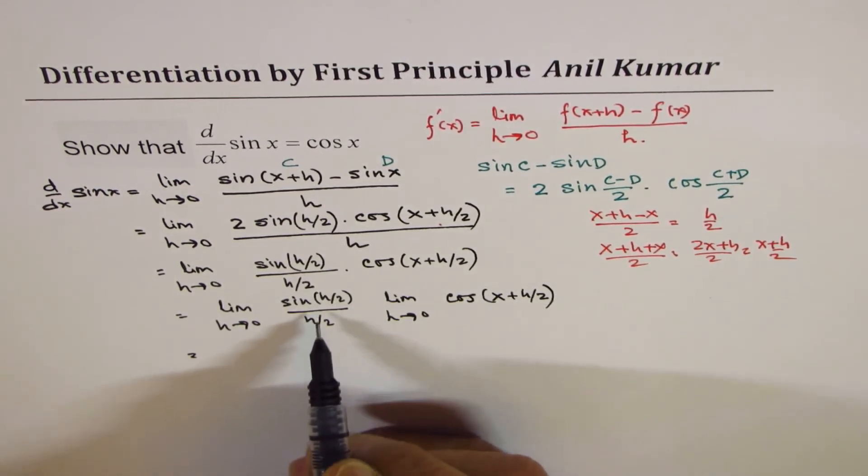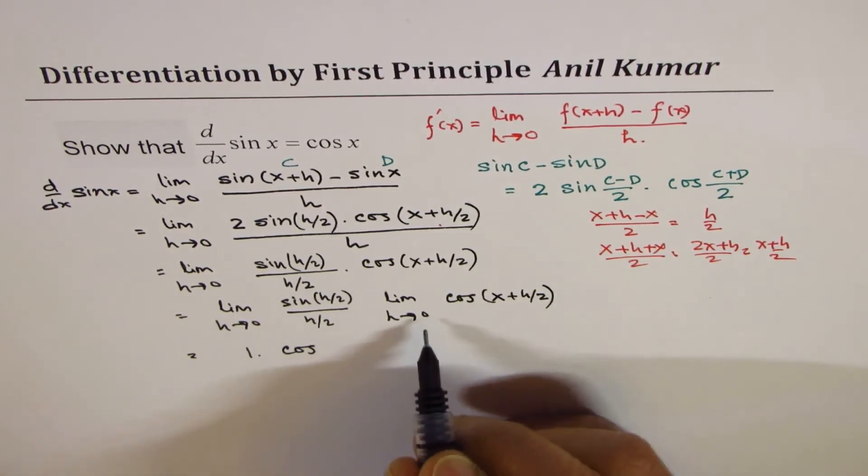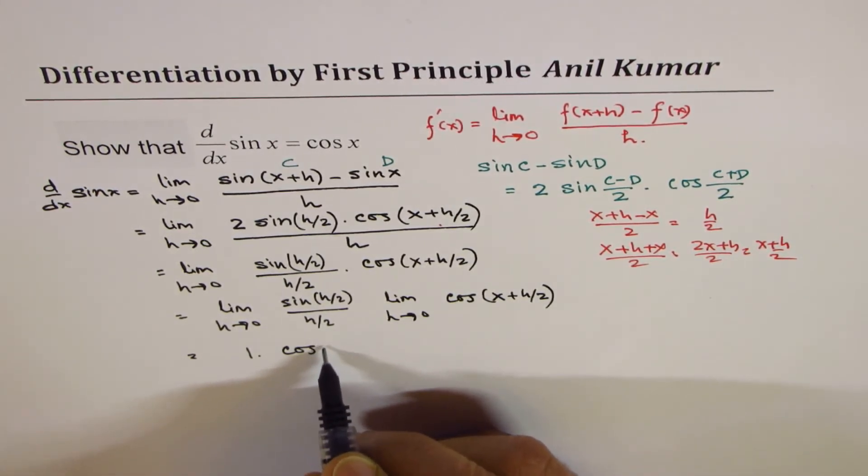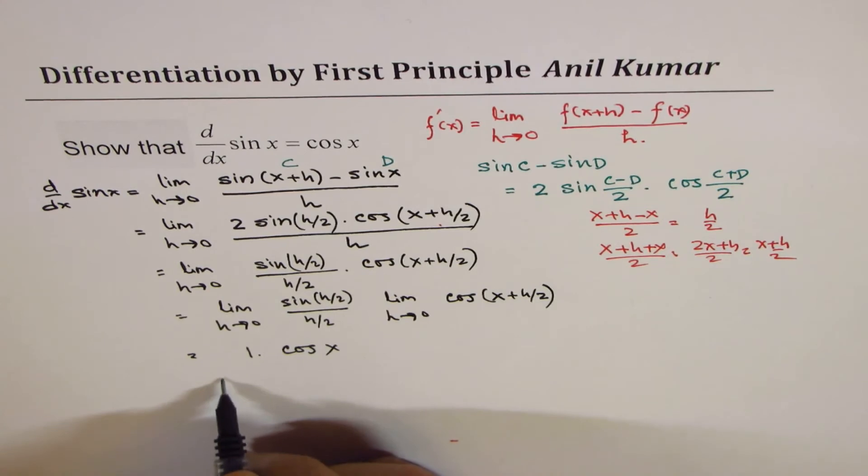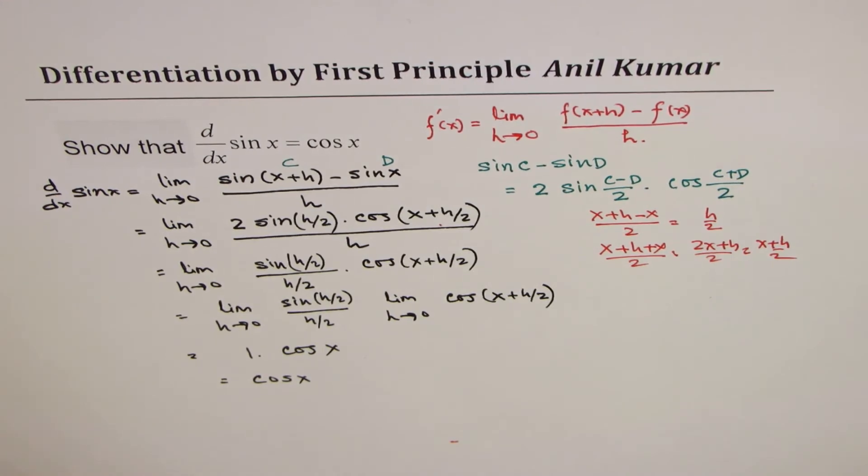Now this is 1, so it is 1 times the limit, which is cos of x. If I substitute h as 0, I get cos of x, so we get the derivative of sine x is equal to cosine x.